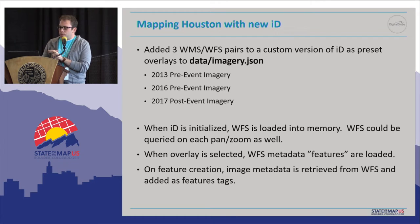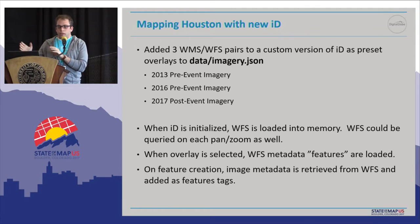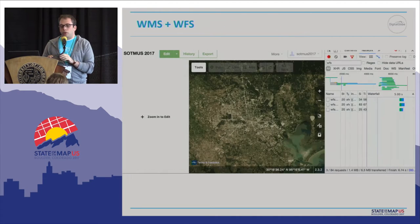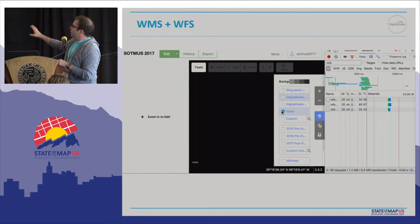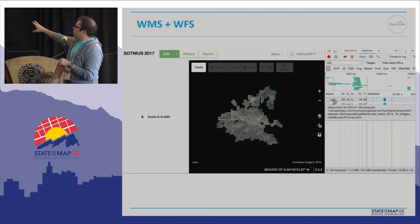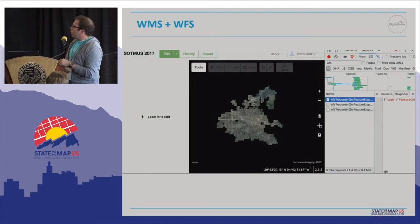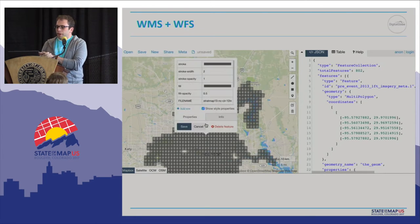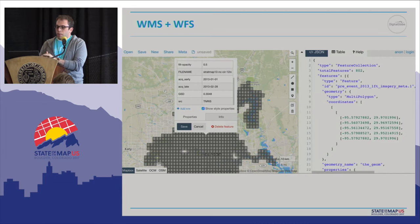For the Houston use case, we took three WMS/WFS pairs in a custom version of iD, added to the data imagery JSON. We have pre-event imagery from 2013 and 2016, and post-event imagery from 2017. When iD is initialized, the feature information is loaded into memory — it's also updated on map pan and zoom. We avoided a live demo, so we have a GIF. This shows loading the WFS information in the background, and then loading it into GeoJSON.io so you can see the attribution on the back end.